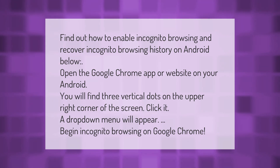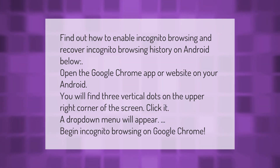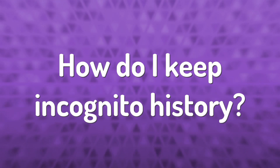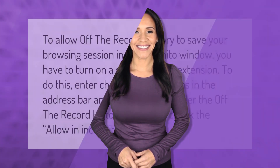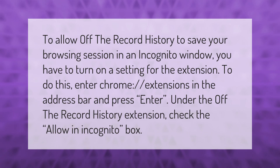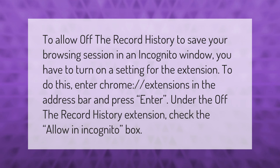A drop-down menu will appear. Begin incognito browsing on Google Chrome. To allow Off The Record History to save your browsing session in an incognito window, you have to turn on a setting for the extension. To do this, enter chrome://extensions in the address bar and press Enter.